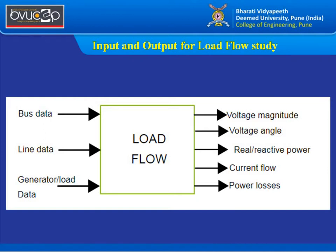Load flow is the heart of the system. Inputs required include bus data (voltage magnitude, voltage angle, real power, reactive power depending on bus type), line data (resistance, reactance), and generator and load data. Outputs obtained after performing load flow include voltage magnitude, voltage angle, real and reactive power, current flow, and power losses — all essential for maintaining the system in stable condition.